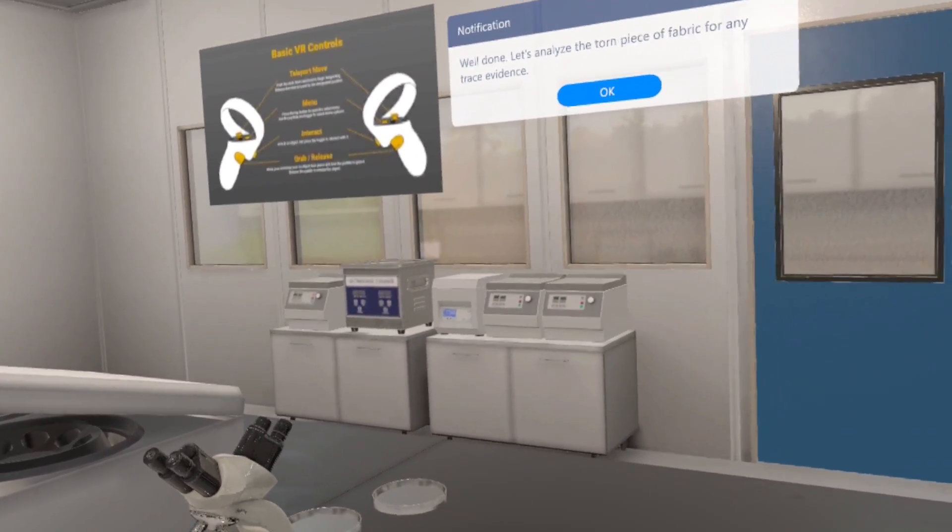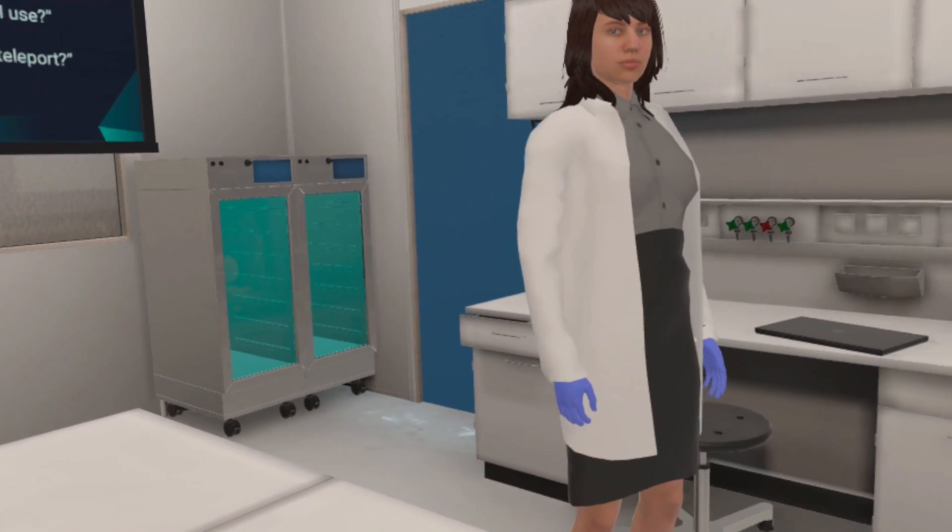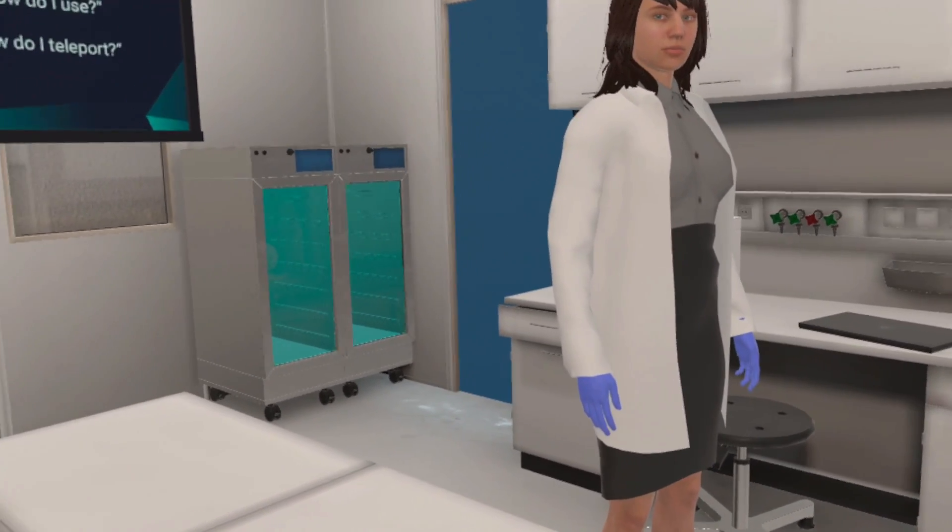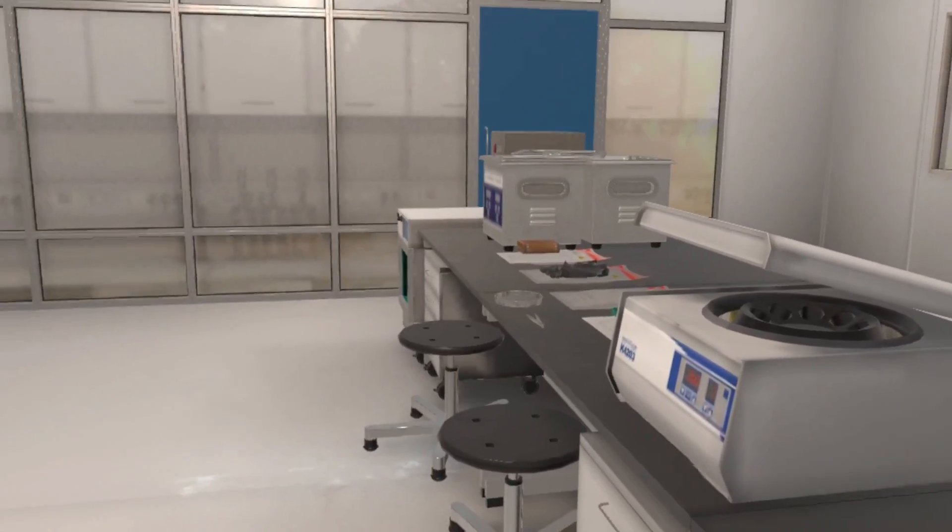Well done! Let us analyze the torn piece of fabric for any trace evidence. Get the torn piece of fabric from the evidence bag and place it under the UV light.